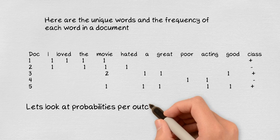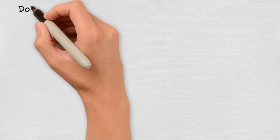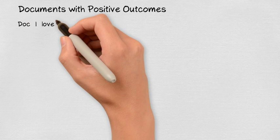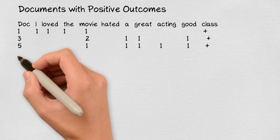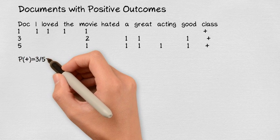Let's look at the probability of a positive outcome. These are the documents with positive reviews. So the probability of positive is 3 over 5, that is 0.6.